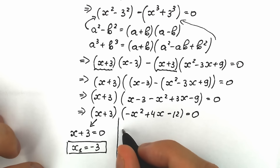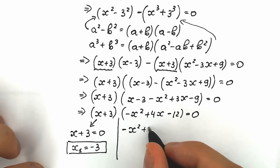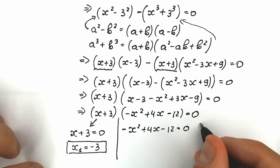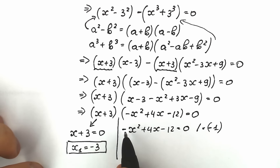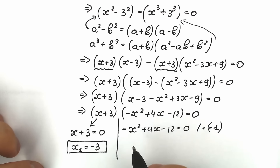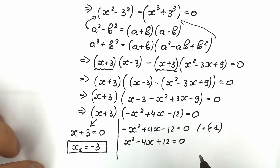This is a quadratic equation: minus x squared plus 4x minus 12 equals 0. Let's multiply both sides by minus 1 — it changes nothing, but now we have a positive leading coefficient. So we have x squared minus 4x plus 12 equals 0.